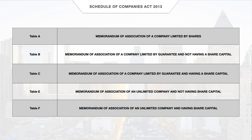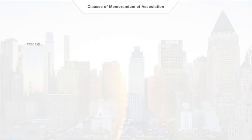A memorandum of association is a very structured document, which is standardized so as to make people's lives easier while reading it. A few clauses of an MOA are the name clause, the situation clause, the object clause, and so on.